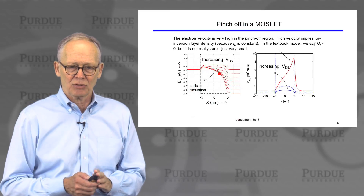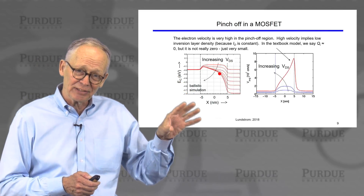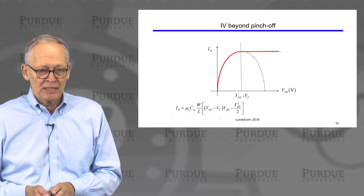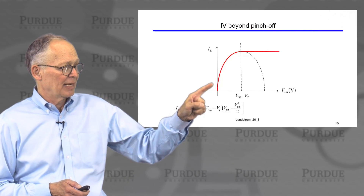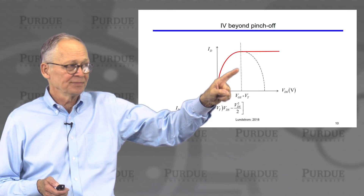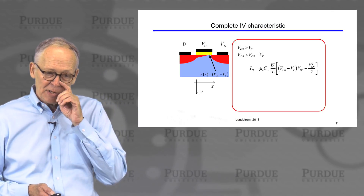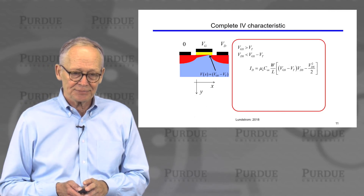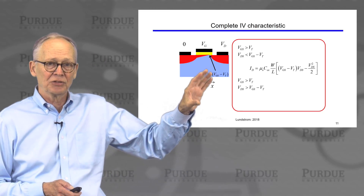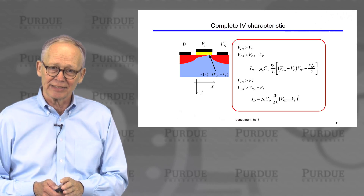That's the physics of pinch-off. In the textbook model we say the mobile charge is zero, but we really mean it's very small — and the very high electric field takes that very small mobile charge and keeps the current constant. So the IV characteristics look like this: we have the triode region, we hit the maximum current, the gradual channel approximation breaks down, but the current continues to flow at that maximum value. That is the saturated current, and it continues independent of drain voltage.